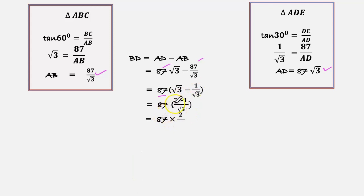So 87, so 3 minus 1 is 2. So 87 into 2 by √3. Rationalizing.